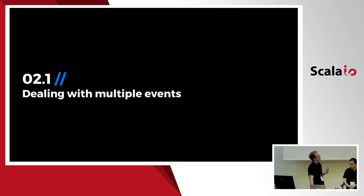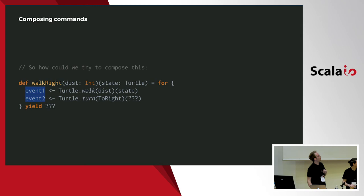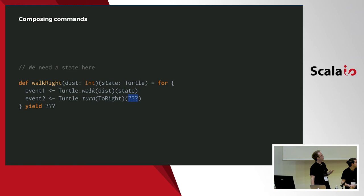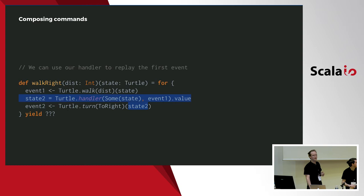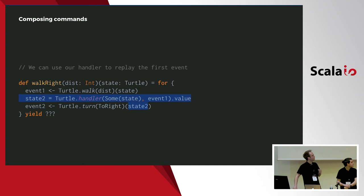Let's see how we could emit multiple events from our code. We take the walk-right function and now we deal with events, not state. We need a state to call the second command, and the simplest way is to use the handler we defined before to replay in memory the first ongoing event to get an intermediate state. We pass that state along to the second command. It's important to note this state only exists in memory — it hasn't been persisted. We only need it to compute the next event.